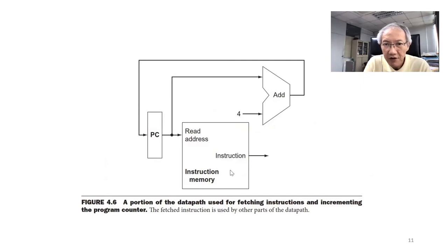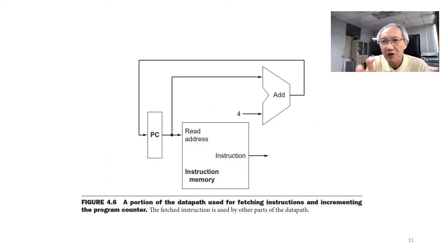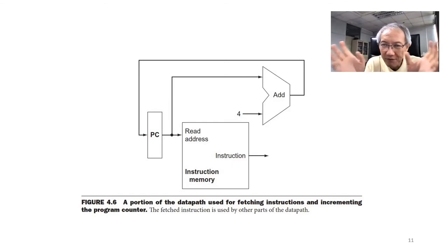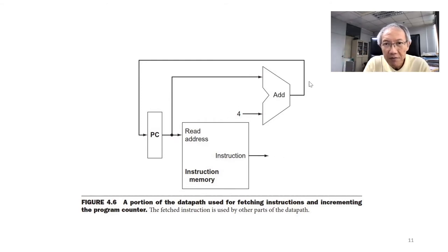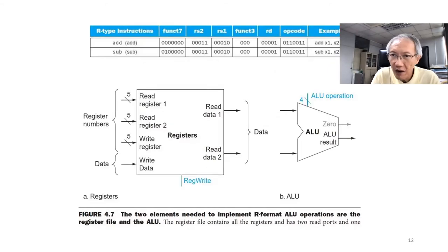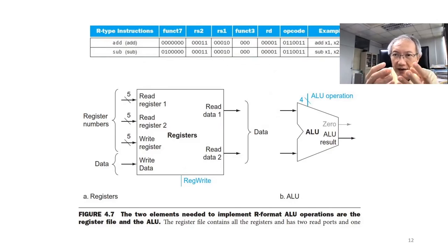We have the instruction memory. Actually, instruction memory also resides in the RAM, in the main memory, but for this presentation we divide it into two parts. We use the program counter to address the instruction memory; therefore the instruction comes out. Once we read the instruction out, for the next instruction we increment the program counter by four. For register operation, you read the value from two registers and perform the operation on the arithmetic logic unit, then write the value back to the register.